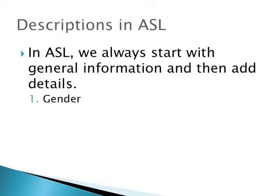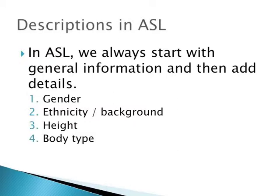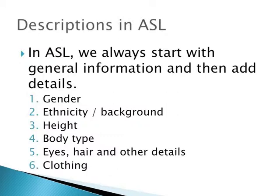First we talk about gender — are they a guy or a girl? Then we move on to ethnicity: what kind of background do they have, what's their race? Then we talk about height and body type. Then we add details like eyes, hair color, and any other distinctive features. Last, we talk about clothing, because that normally changes every day.